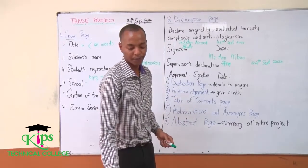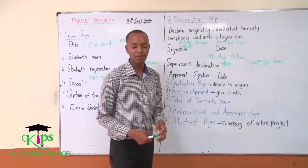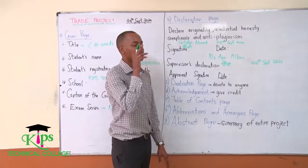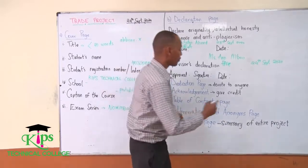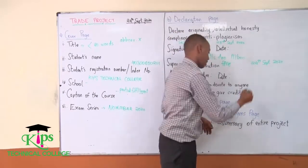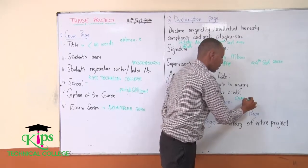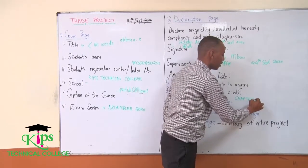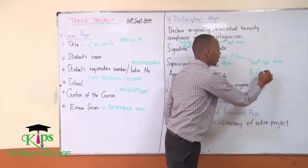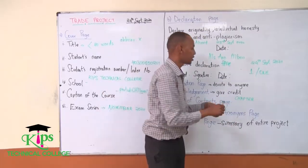Let's talk about the fifth thing, which is the table of contents. Whatever you put in the table of contents must match the headings. If you have decided that chapter one is written in caps, they must match whatever has been written. If chapter one is written with the word 'one' or the number '1', the table of contents must be done the same way — it must be consistent throughout.